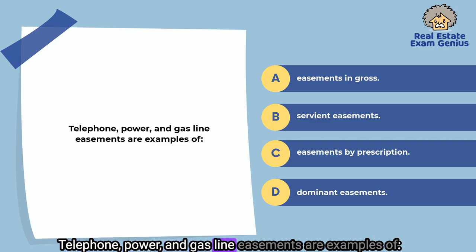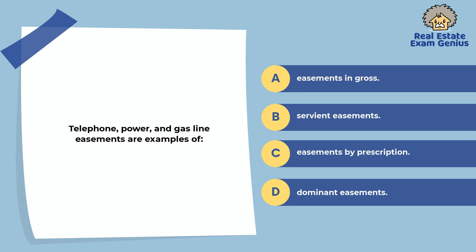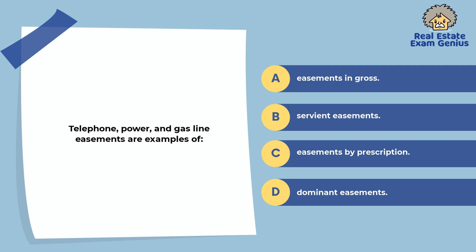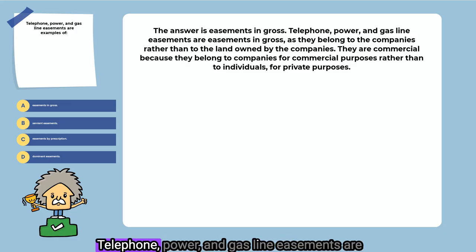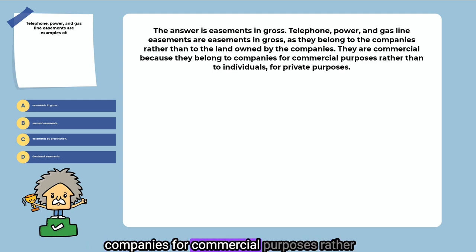Telephone, power, and gas line easements are examples of: easements in gross, servient easements, easements by prescription, or dominant easements. The answer is easements in gross. Telephone, power, and gas line easements are easements in gross, as they belong to the companies rather than to the land owned by the companies. They are commercial because they belong to companies for commercial purposes rather than to individuals for private purposes.